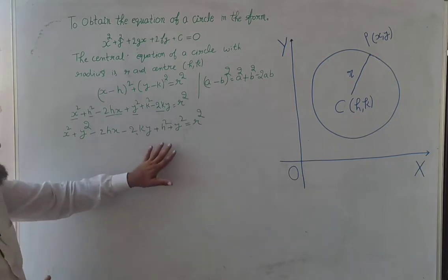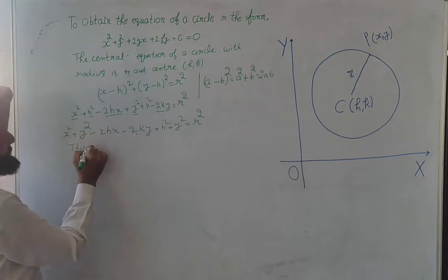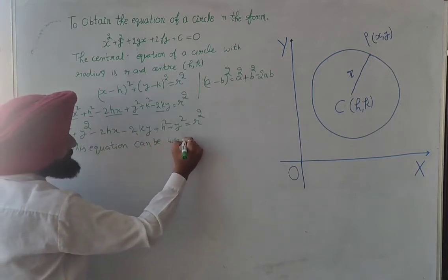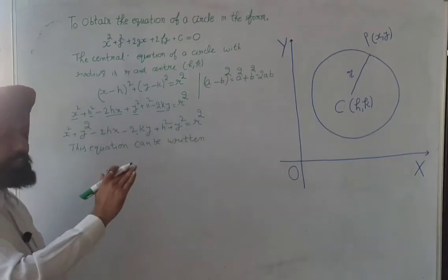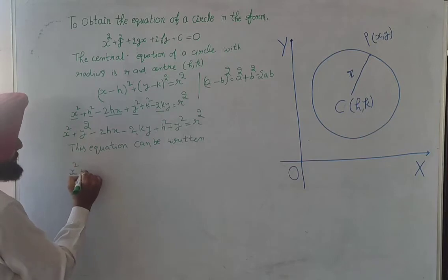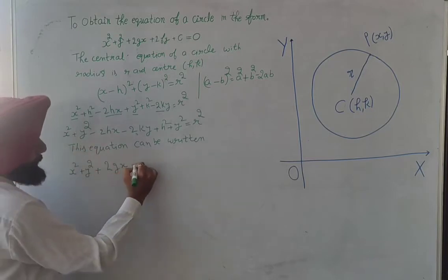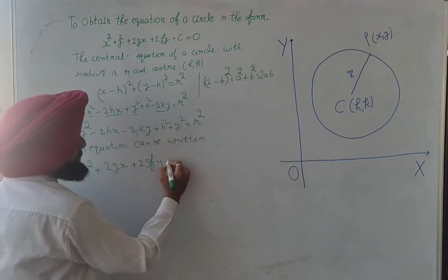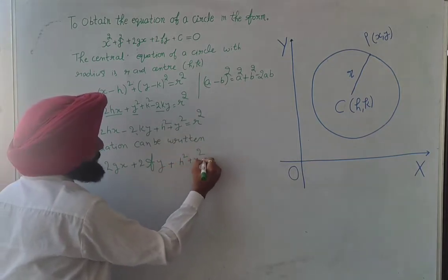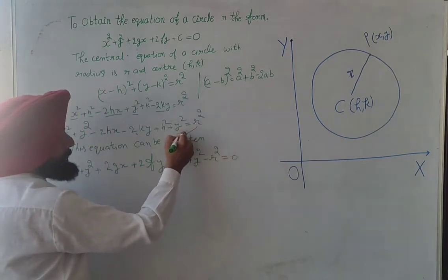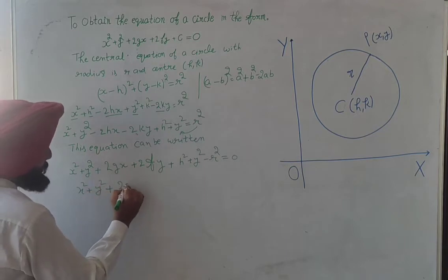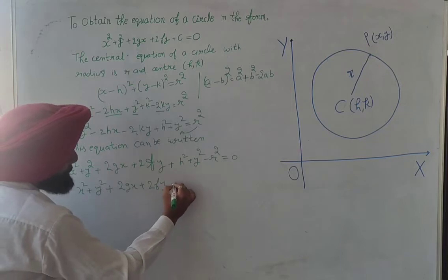This equation can be written as x square plus y square plus 2gx plus 2fy plus c. Transpose r square to the left hand side and write it as c: x square plus y square plus 2gx plus 2fy plus c equal to zero.